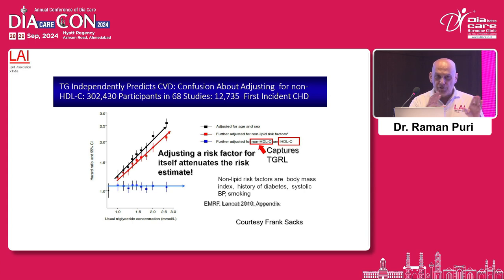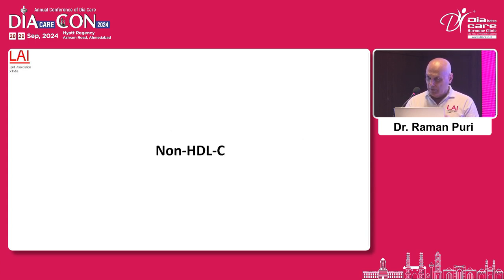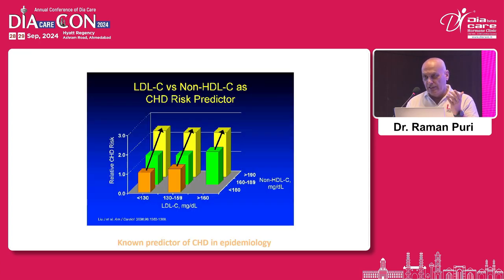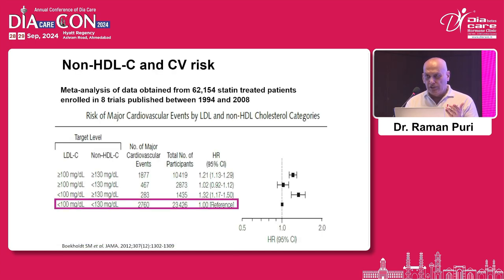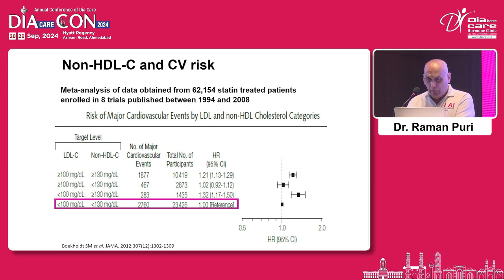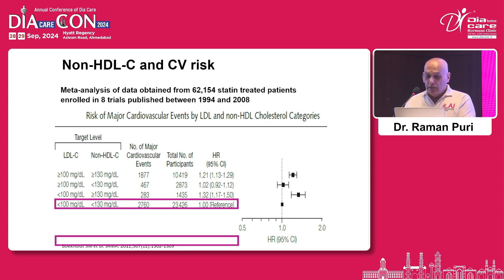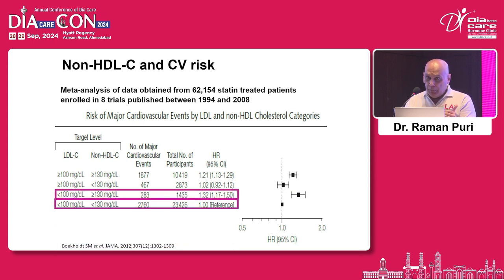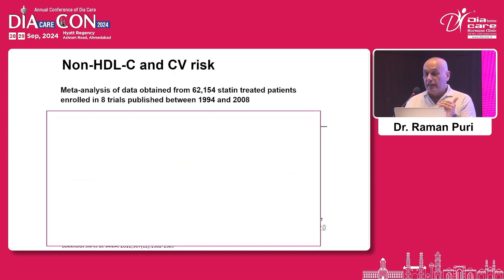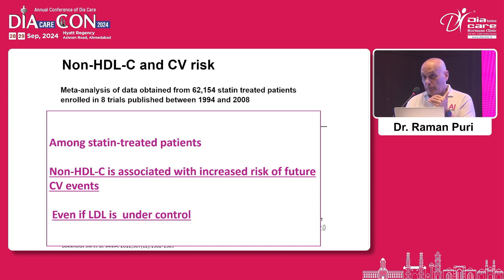This means non-HDL cholesterol is most important — it is the total circulating atherogenic cholesterol in the circulation. At any level of LDL cholesterol, an increase in non-HDL cholesterol is associated with higher cardiovascular events. Statin trial data shows that with reference of LDL less than 100 and non-HDL less than 130 mg — if LDL is less than 100 but non-HDL is more than 130, there is 32% more events compared to those with non-HDL less than 130 and LDL more than 100. So in statin-treated patients, it is non-HDL cholesterol which predicts future cardiovascular events. It should be treated as strongly as possible.